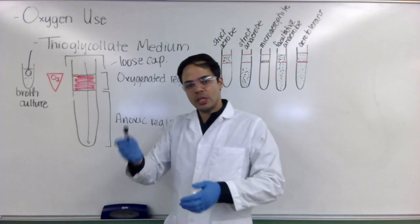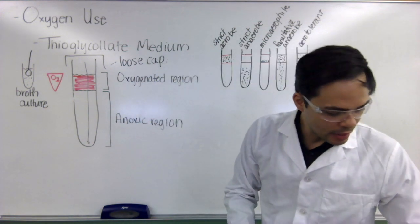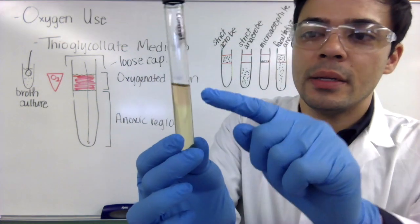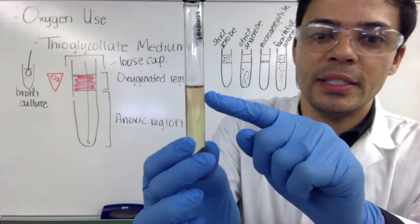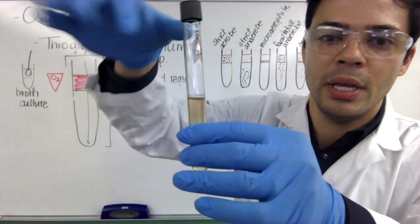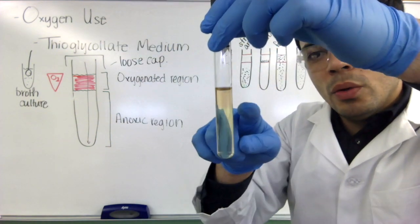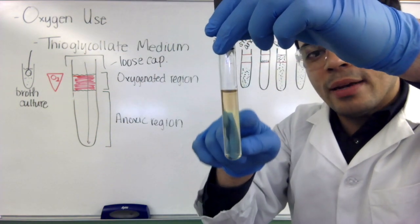And then you take the tube between your hands and for example here is one of those tubes and actually you can see the gradient of the resazurin at the top where we have the oxygenated region and then the region at the bottom here where we have the deoxygenated or anoxic region.